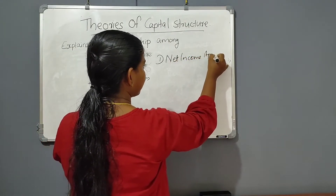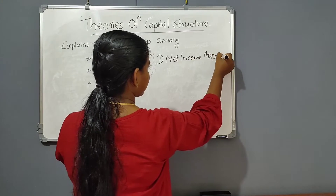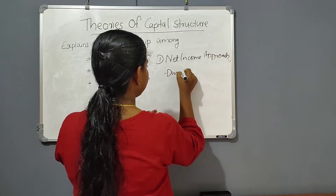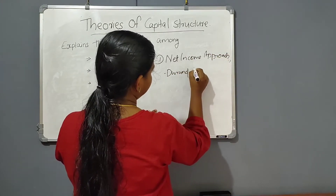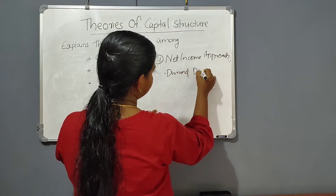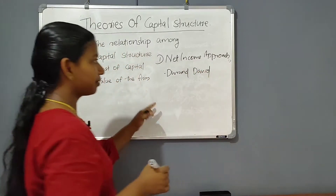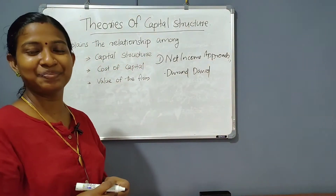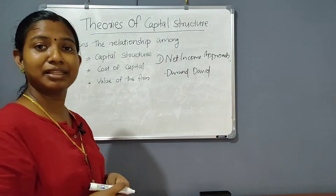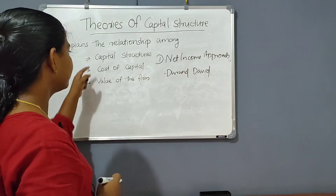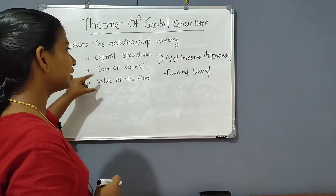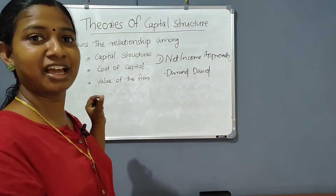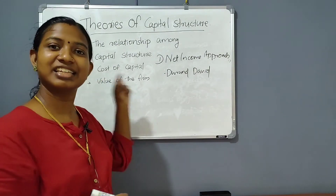The Net Income approach — also called the Nettingham approach — was first proposed by Durant David. This theory explains the relationship with capital structure.